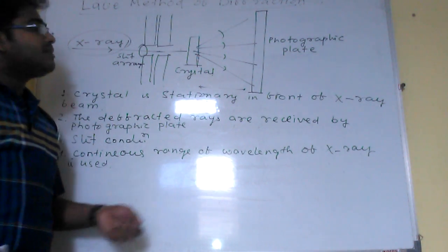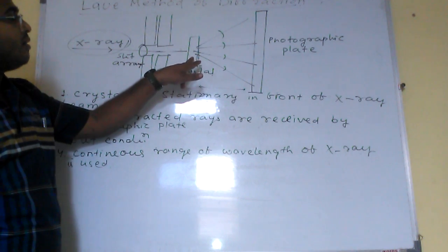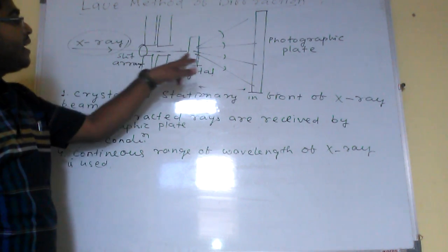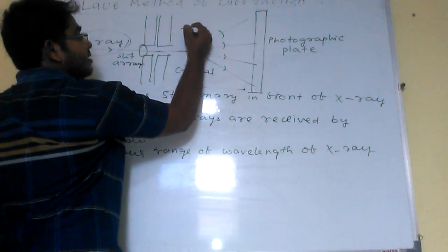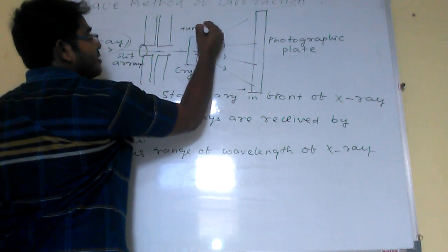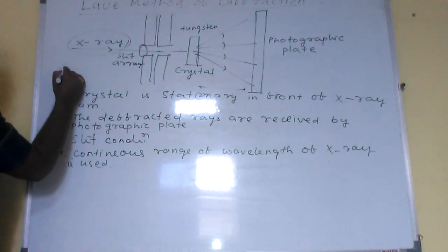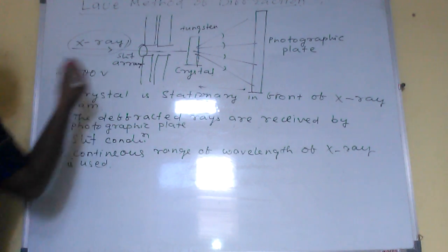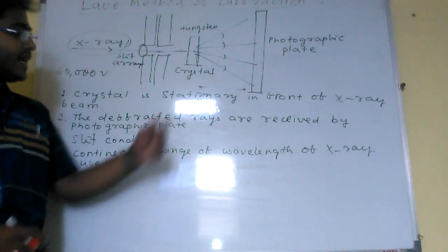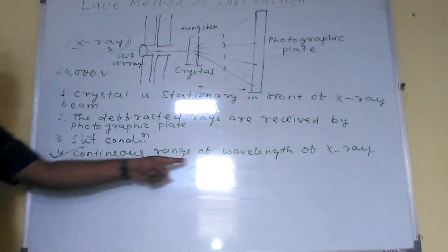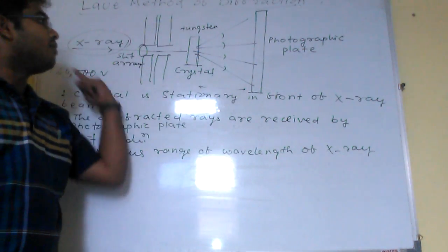For that, depending upon the crystal, the crystal must be of tungsten, and we apply about 60,000 volts so that we can get such a continuous range of wavelengths in this method.